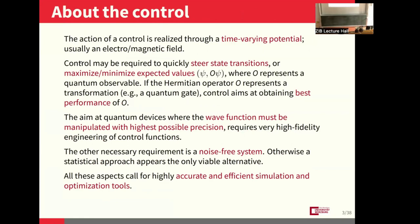Why optimal control problems in quantum mechanics are important is something we all know very well. The point I would like to make — which was also made by Professor Kostlo — is that since we want very high precision in the construction of our control functions, the question is how we can obtain this precision by constructing sophisticated codes that are able to reach very high accuracy in solving the optimality system, which is the starting point for any numerical method we use.